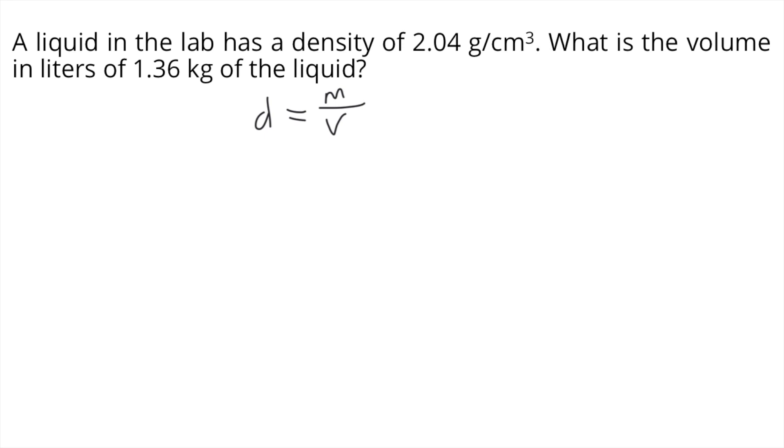Now the problem is asking for the volume, so we need to rearrange the equation to get the volume. Multiply both sides of the equation by V. Volume cancels out on the right side. So now we have M is equal to VD.